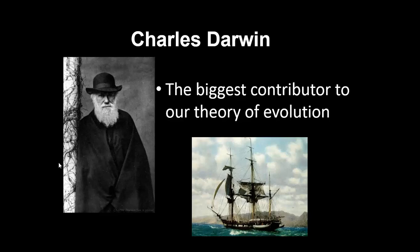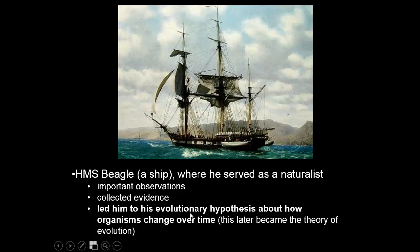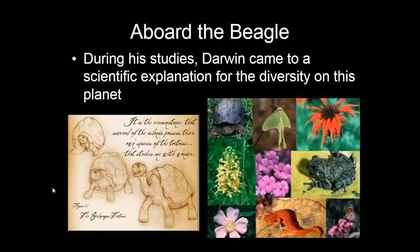Charles Darwin is the biggest contributor to our theory of evolution. Many have helped shape Darwin's ideas and continue to take them further, but Charles Darwin was the first to really put all of this together in a way that worked. Charles Darwin took a five-year trip on the HMS Beagle, which was a British ship that went around the world discovering and collecting. Darwin was the naturalist aboard that ship — he collected evidence and made important observations. As he sailed from place to place for five years, he started to come up with a new idea about how life on Earth works. We're now even applying his theories to possible life on other planets.